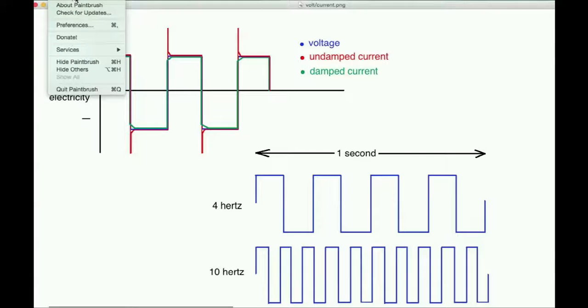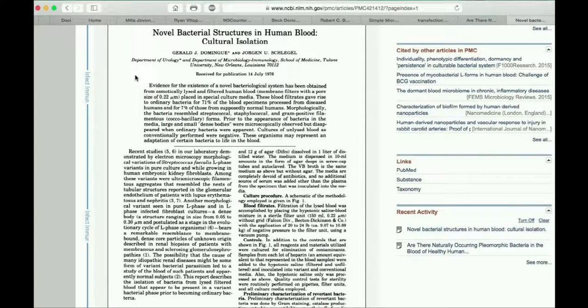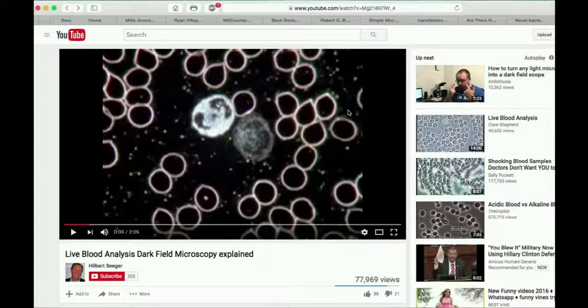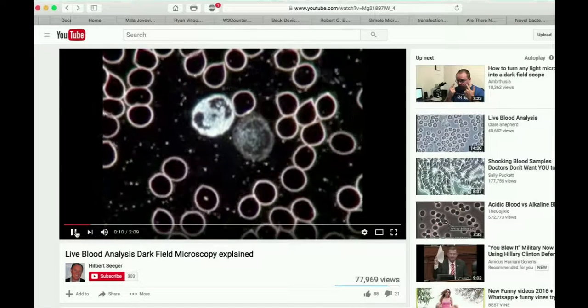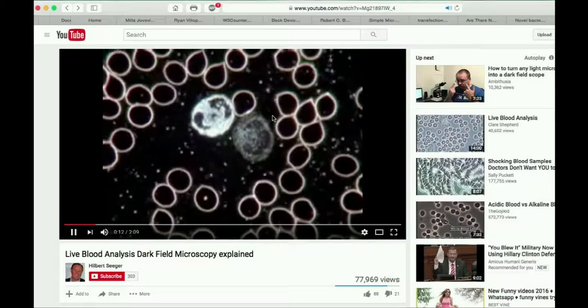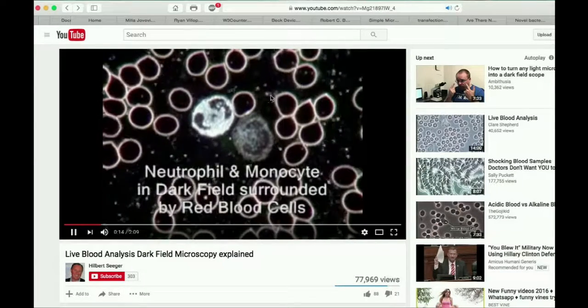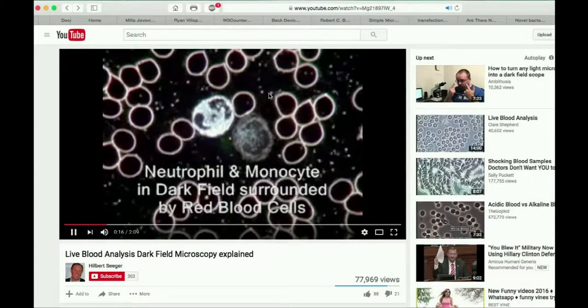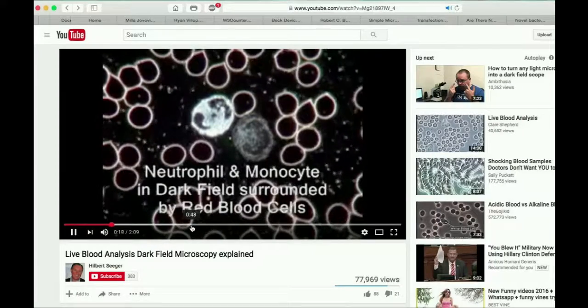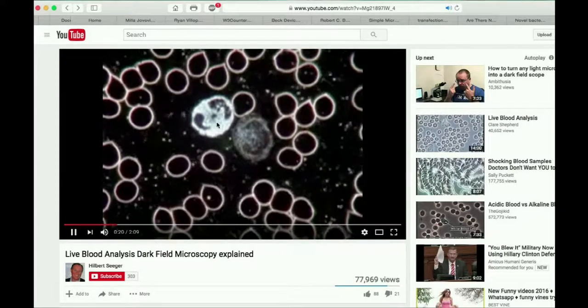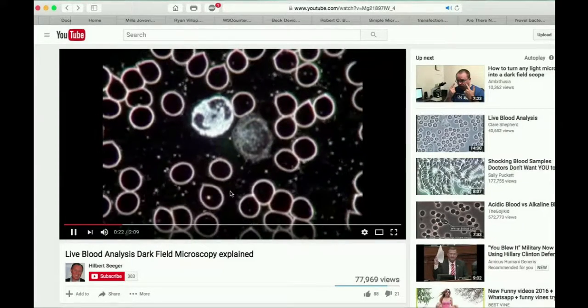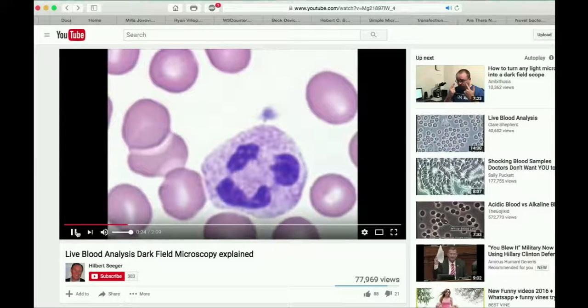Bacteria have tails, not all of them, some of them do, have tails that help them to move around. They wiggle their tails, and they move. You see how they're squiggling around? That's bacteria. Those are the two, neutrophil and monocyte. That's just one example. I'm not saying that everyone has that.